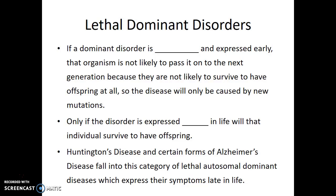What about dominant disorders which are lethal — which are fatal? If a dominant disorder is lethal and it's expressed early in life, that organism is not likely to survive to pass it on to the next generation. They won't have survived long enough to reproduce. Only if a disorder is expressed late in life will that individual survive to have offspring.